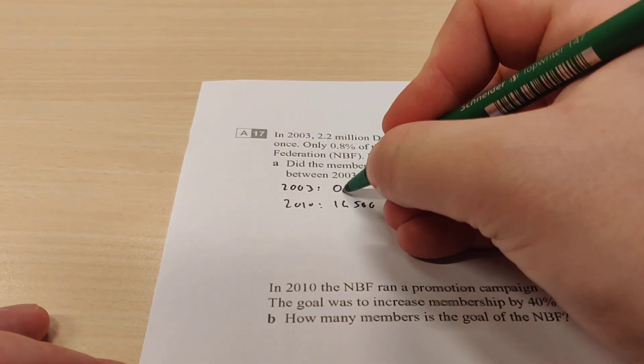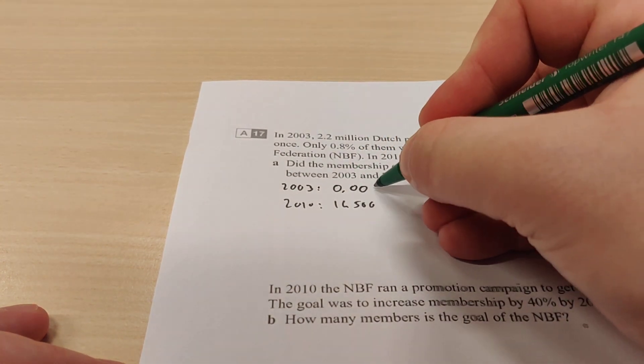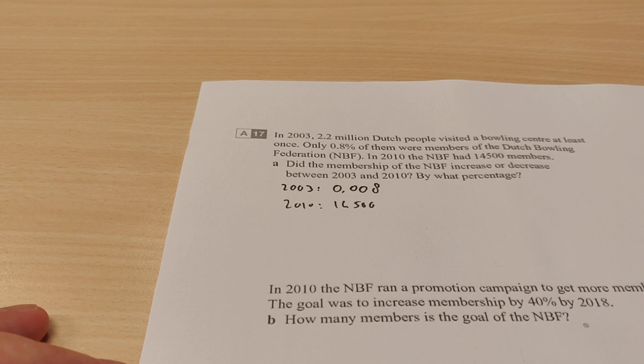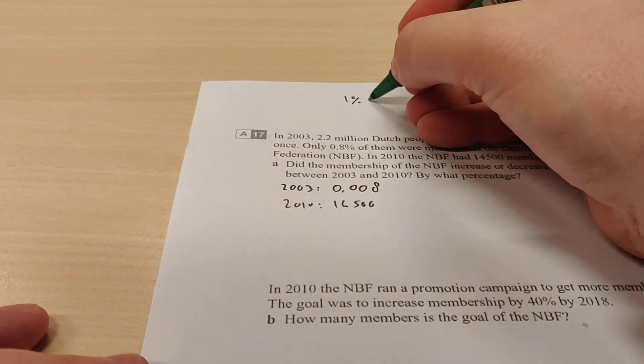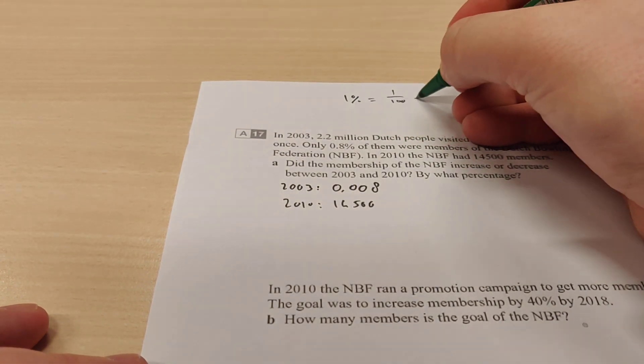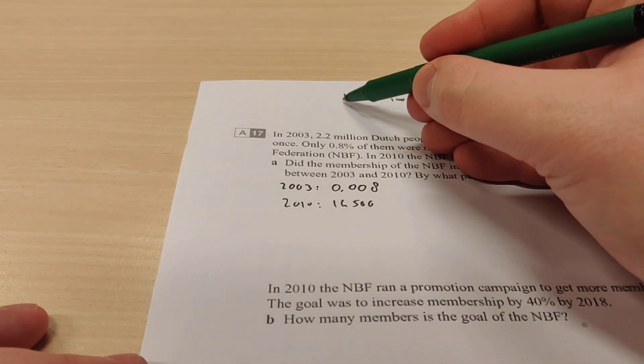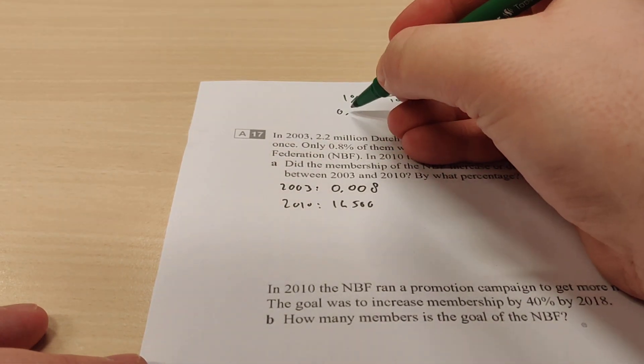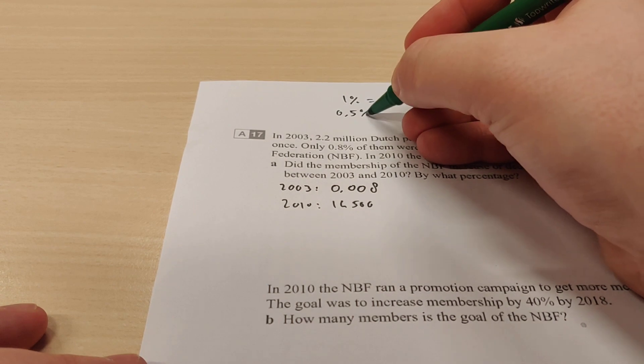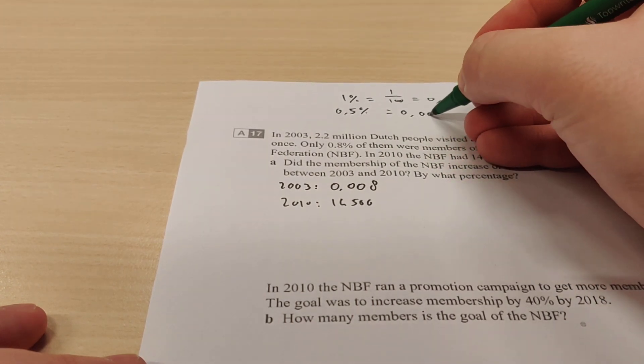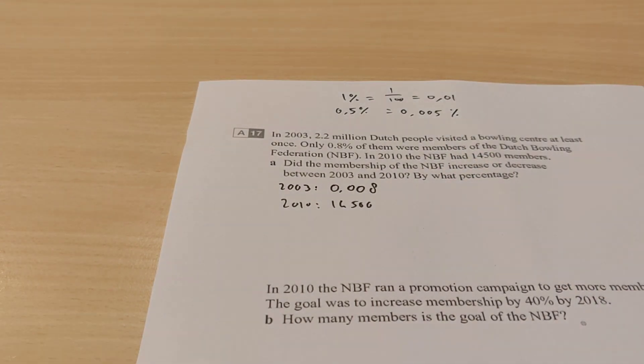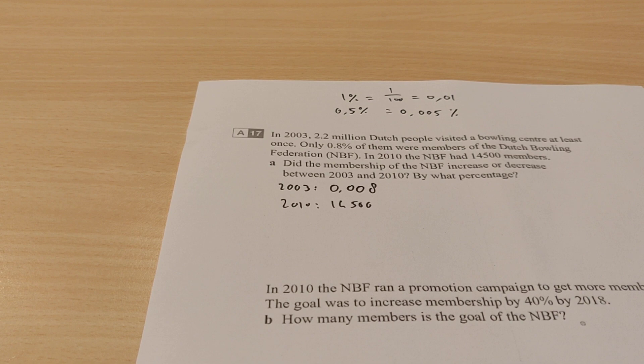Now 0.8% is 0.008. The reason for that is because 1% is 1 out of 100, so that's 0.01. So you see that you move the point two places. So if the number is already broken, like 0.5%, then it will be 0.005. You can also check that with your calculator if you want.